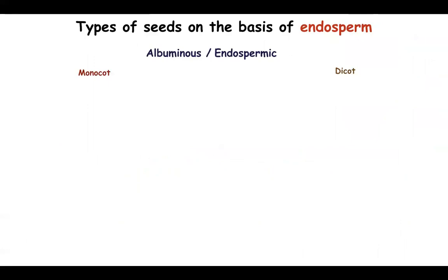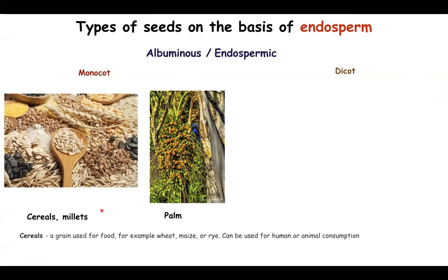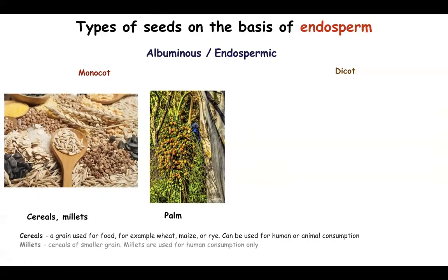Among albuminous or endospermic seeds, monocot examples include cereals, millets, and palms. A cereal is a grain generally used for consumption by both humans and animals, obtained from grasses. A millet is a small-sized grain generally used for consumption by humans only — very rarely used for animal consumption. So cereals are consumed by humans and animals, whereas millets are used exclusively by humans.